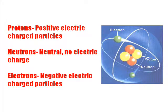Electrons are negatively charged. Neutrons do not have electric charge, and protons exert a positive charge.